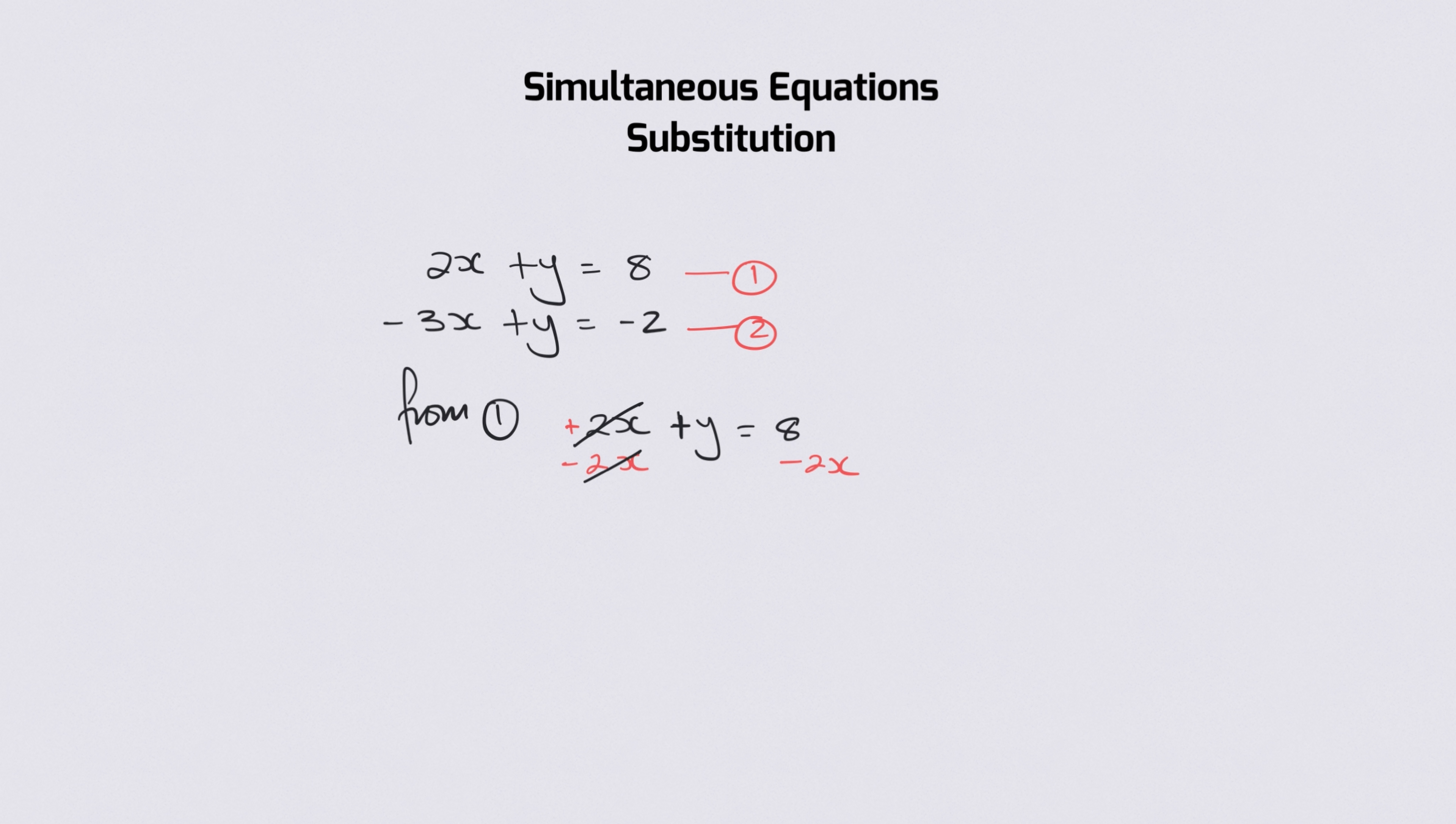That means that 2x take away 2x is cancelled out. y is now on its own and then I've got 8 take away 2x on this side and I will call this equation 3.